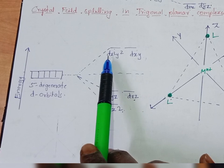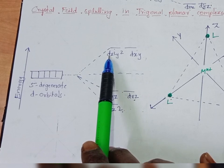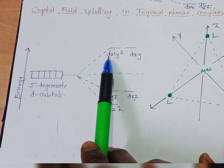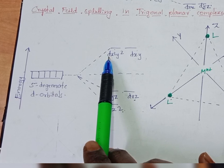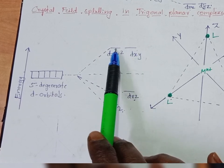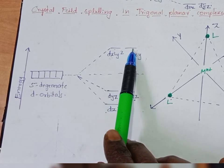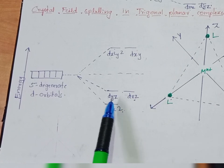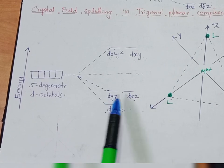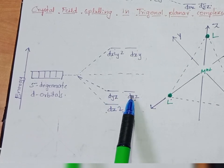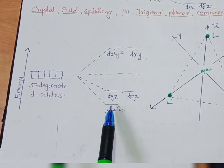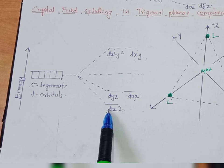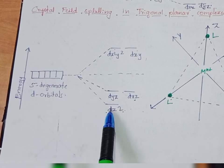Therefore, the ligands which have lobes in the xy plane — dx²-y² and dxy — will get the higher energy level. Then dyz and dzx will get the next energy level, and the dz² orbital will get the lowest energy level.